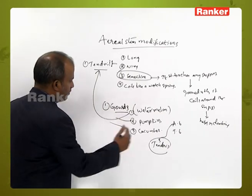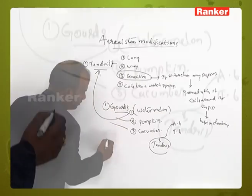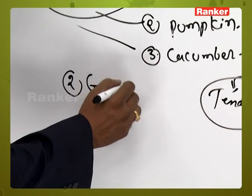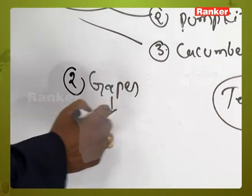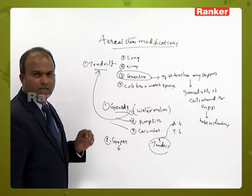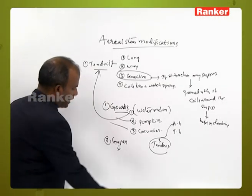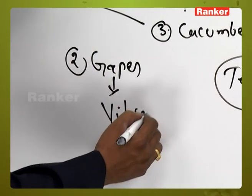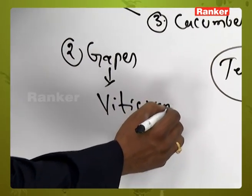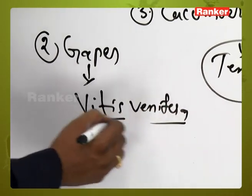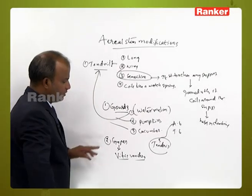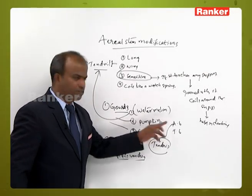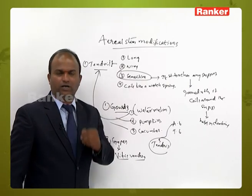Another example is grapes. The scientific name of grapes is Vitis vinifera. In grapes, which bud is modified into a tendril — is it the axillary bud?